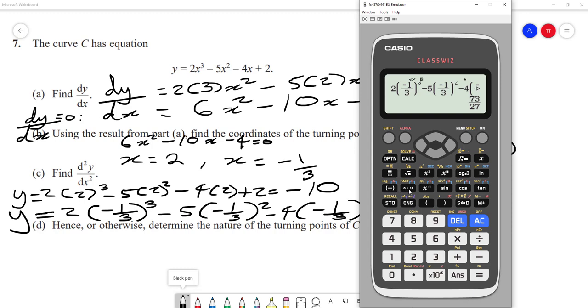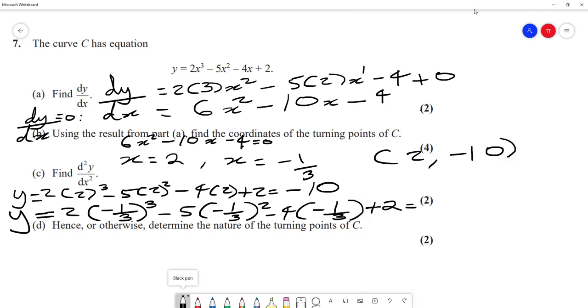And that gives me 73 over 27. So the y-coordinate is 73/27, and my final coordinate here would be (-1/3, 73/27).